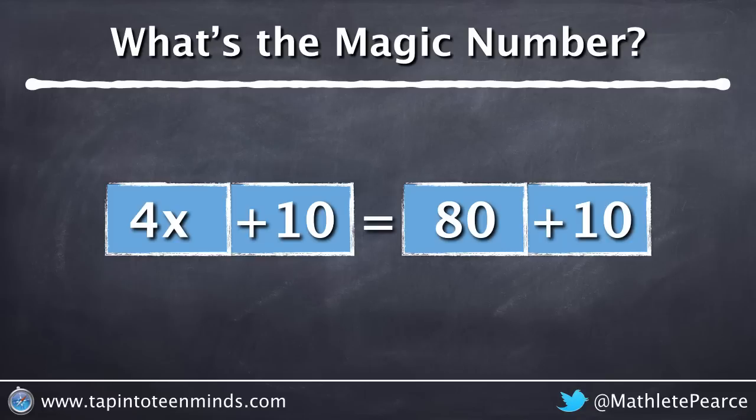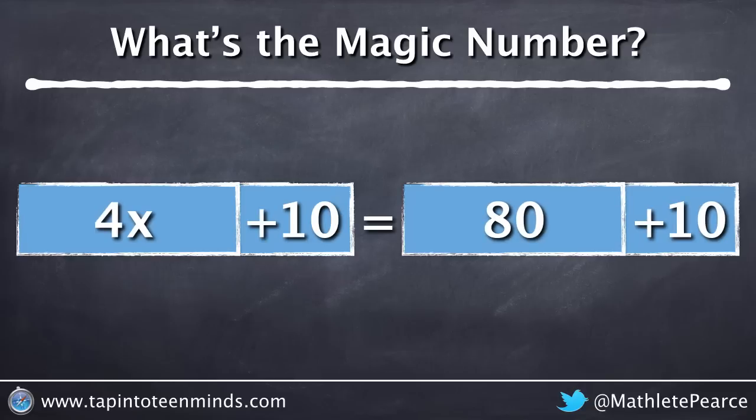Now we know that 80 is much bigger than 10. It's actually eight times bigger. So let's just make this look a little bit closer to scale. I know it's not to scale, but it'll give us a better visual that 4x actually equals 80 and 10 equals 10.